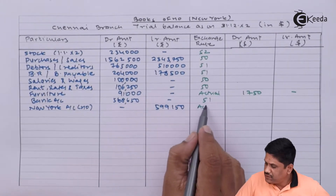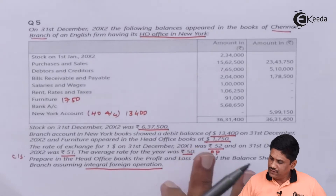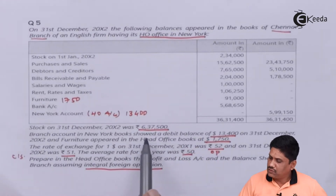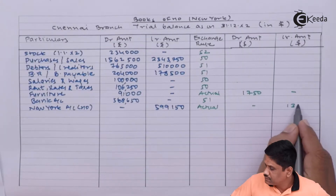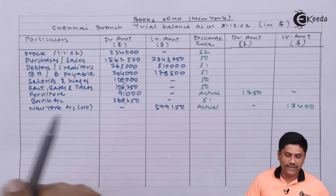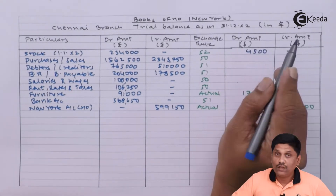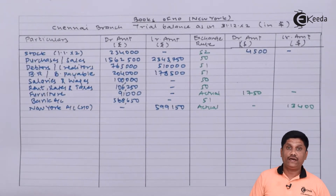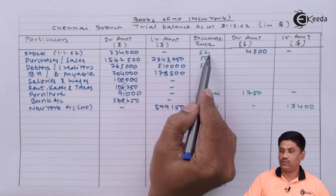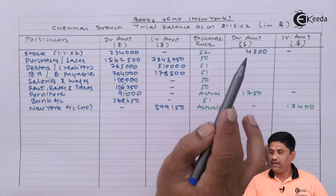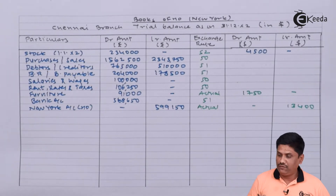New York account will be taken on the actual basis. You need to check: branch account in the New York head office book showed a debit balance of 13,400, so for us it will be a credit balance of 13,400. Now to complete the multiplication — be careful, we have to convert rupees into dollars, so we divide the rupee amount by the dollar rate. For example, 2,34,000 divided by 52 gives us the rate. Earlier we were multiplying foreign currency by the Indian rate; now it is reversed, so be careful about this calculation.